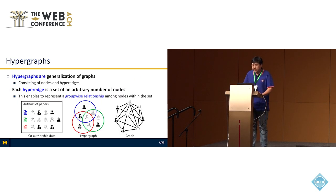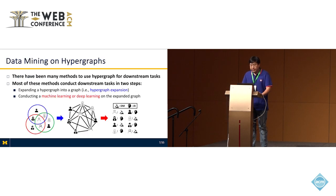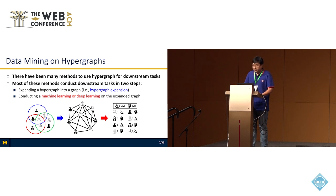A hypergraph is a generalization of a graph consisting of nodes and hyperedges. Each hyperedge is a set of nodes with an arbitrary number of nodes. This enables representing group-wise relationships among nodes within a set without information loss. Thanks to the expressive power of hypergraphs, there have been many methods to use hypergraphs for downstream tasks.